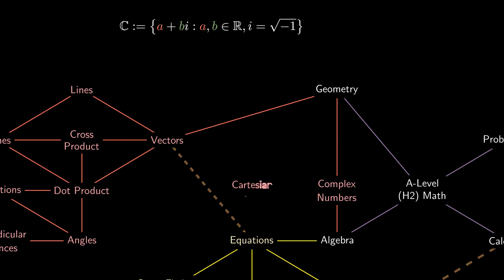This is known as the cartesian form of a complex number. Addition of complex numbers in cartesian form resembles that of vector addition. But complex number multiplication may be a little bit more challenging to compute.